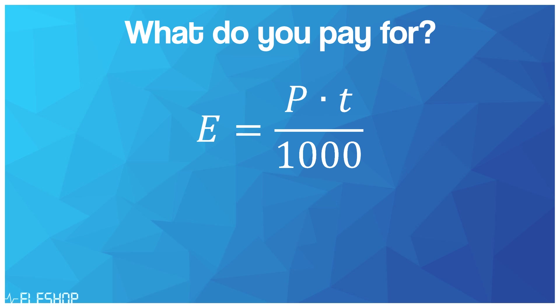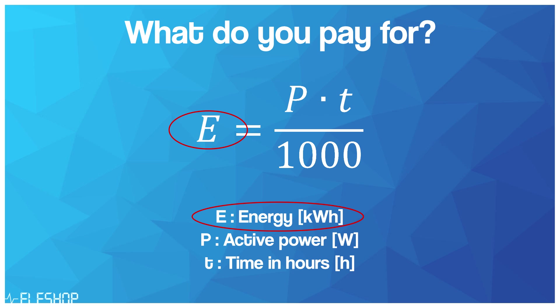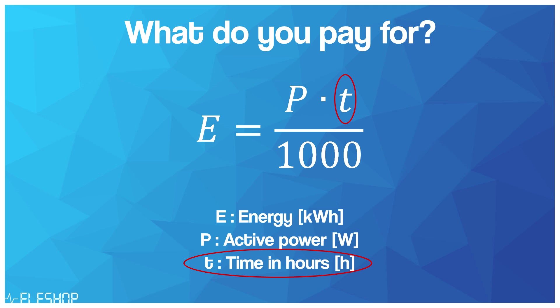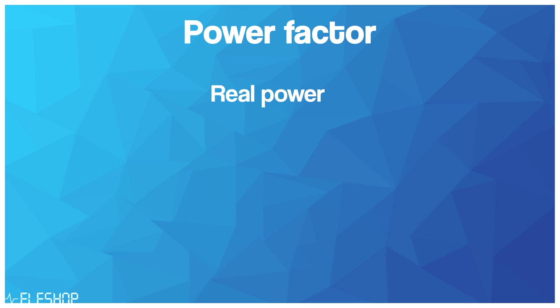Regardless of whether you are using AC or DC, the real power would still be the same as resistive loads act in the same exact manner with either supply. What you are actually paying for is how much active power is being used over time, which you can normally see on your kilowatt-hour meter. You can calculate how much kilowatt-hours are being consumed by a device while in standby by multiplying the measured active power by the amount of time in hours the device is plugged into a socket while in standby.